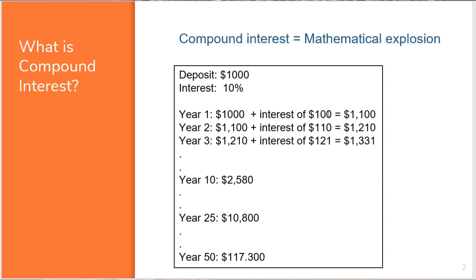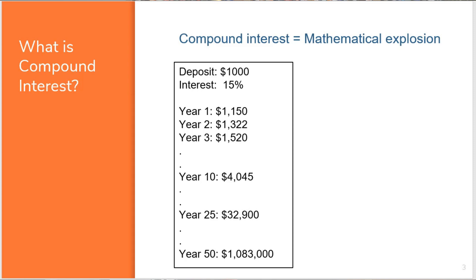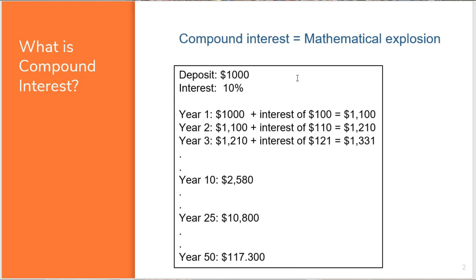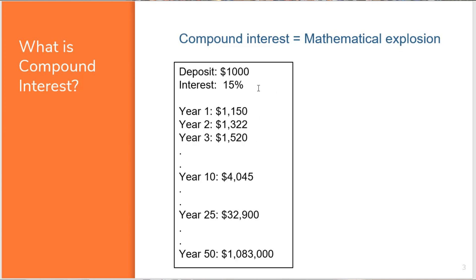Here you can see we have the exact same $1,000 deposit, but now we're getting a bit more in interest — and this is why it is important to learn how to invest and how to optimize your investments. As you remember from the first slide, we had 10% interest; now we have 15%. After year three we have $1,520.